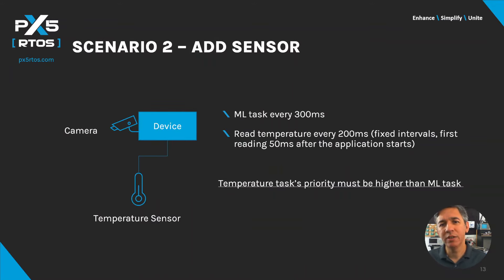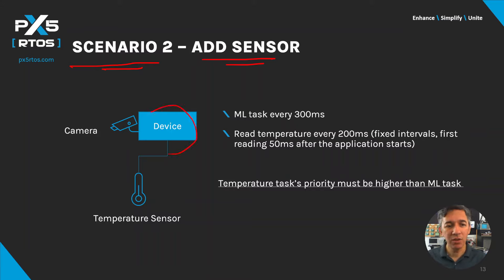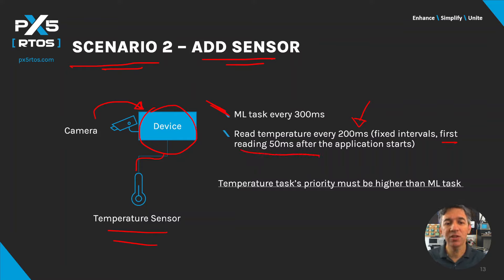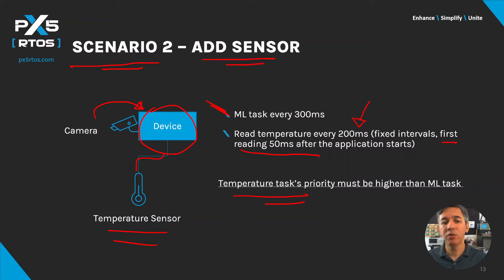Most embedded systems today handle more than one periodic task. In scenario two, we are adding a sensor to the device. It still needs to do the machine learning task every 300 milliseconds using camera input, but it also needs to read a temperature sensor at fixed intervals — every 200 milliseconds, with the first reading 50 milliseconds after the application starts. Because of these fixed intervals, the temperature task will have higher priority than the machine learning task.